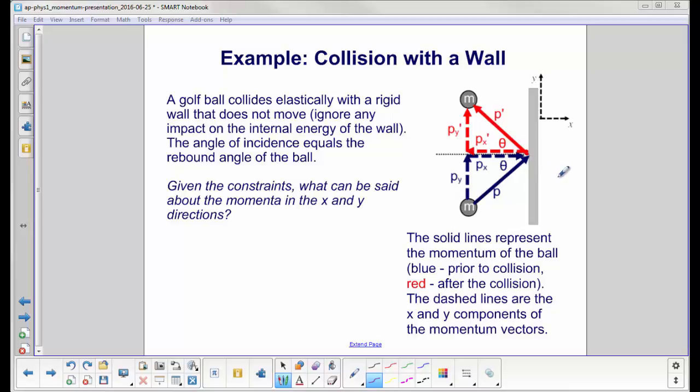Earlier we talked about the one-dimensional case, where if an object hit the wall like this, a light object, it would bounce back, keeping the same magnitude of the velocity, just in the opposite direction. In this case, we're coming at an angle, and since we have an elastic collision, this is very similar to light rays bouncing off a mirror.